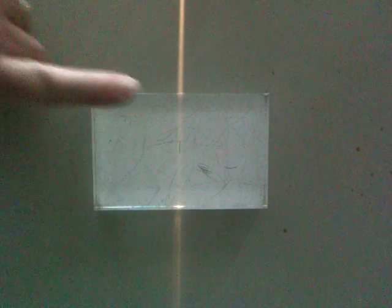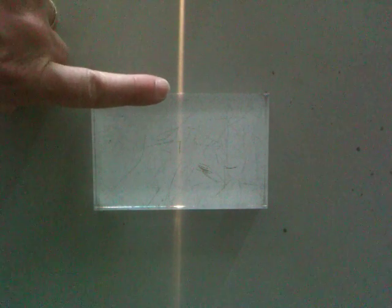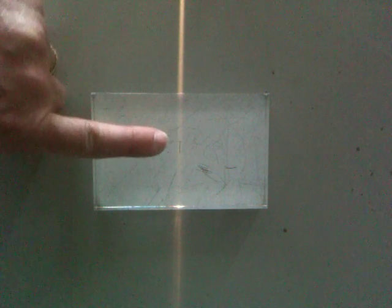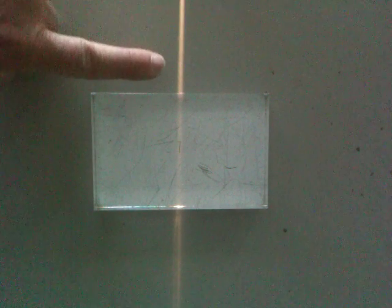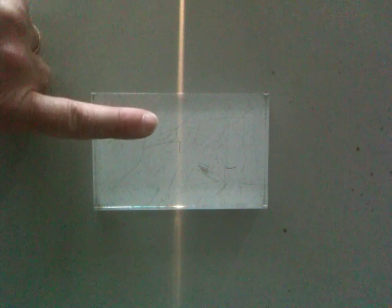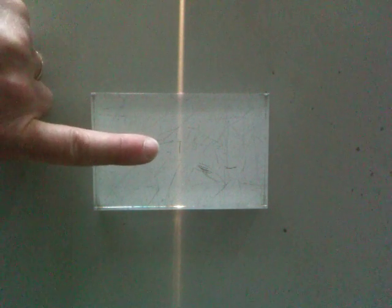When it enters the glass or perspex block, it changes speed. It slows down. If you think about it, it's like yourself walking through water. You walk along the ground and then if there's water that's about knee-deep, you slow down because it's thicker. You've got more material to get through.